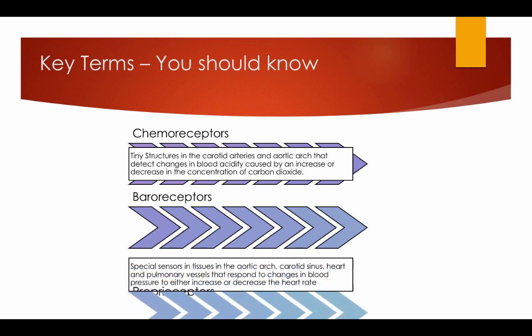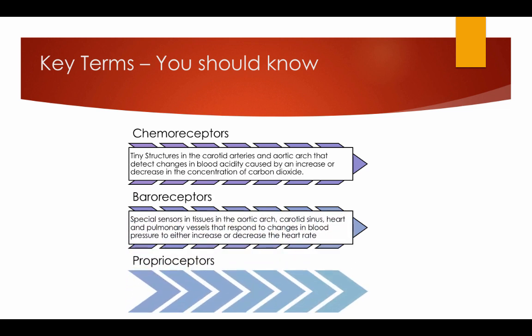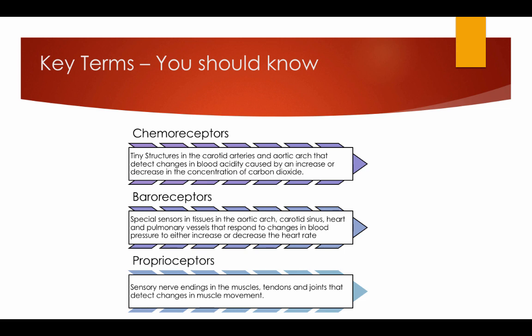Baroreceptors: special sensors in the aortic arch, carotid sinus, heart, and pulmonary vessels that respond to changes in blood pressure to either increase or decrease the heart rate. Proprioceptors: sensory nerve endings in the muscles, tendons, and joints that detect changes in muscle movement.